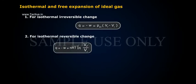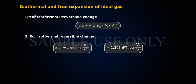For isothermal reversible change, Q equals minus W equals NRT ln(VF by VI) equals 2.303 NRT log(VF by VI).